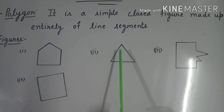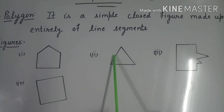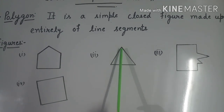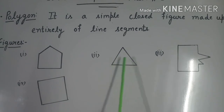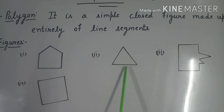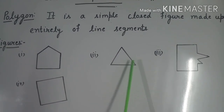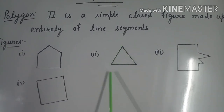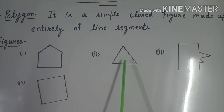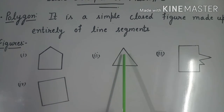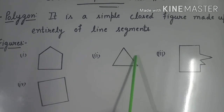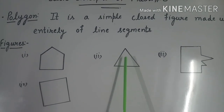The second figure has 3 line segments — 1st, 2nd, and 3rd — and this is a closed figure made of line segments. Therefore, this is a polygon.